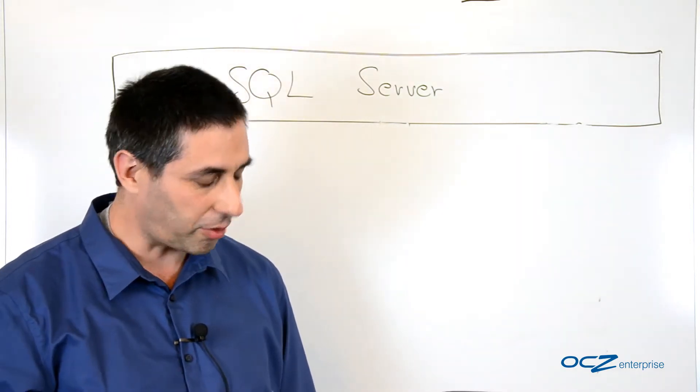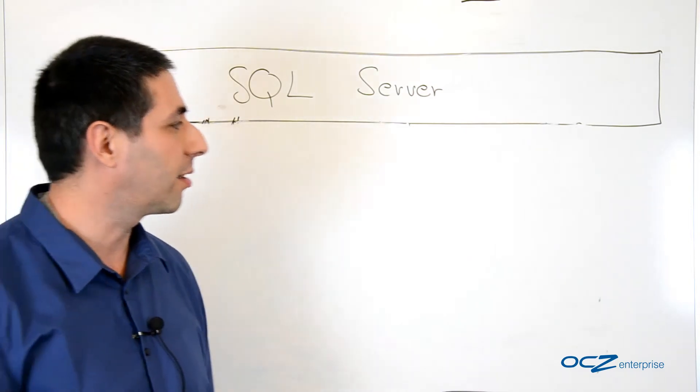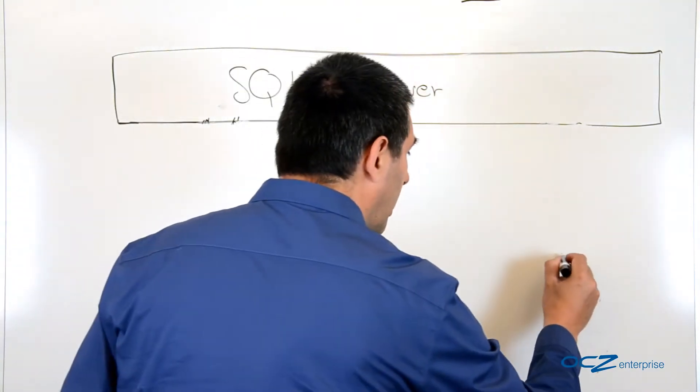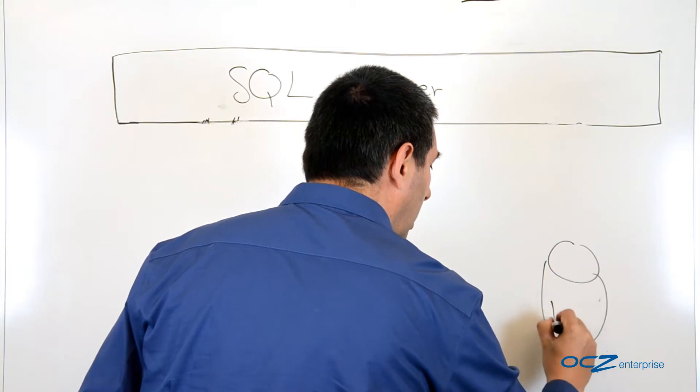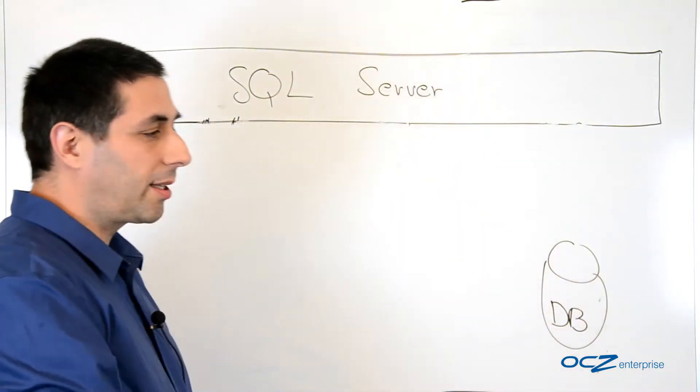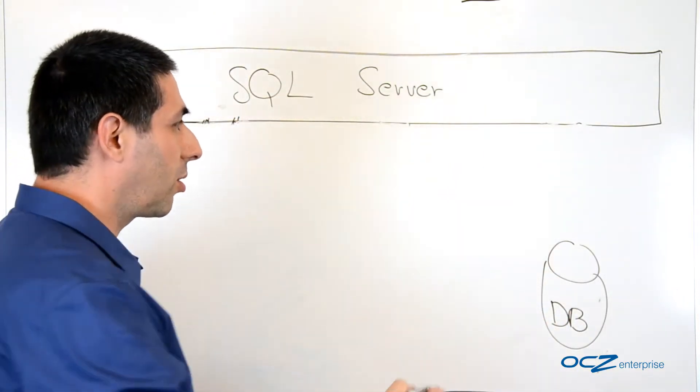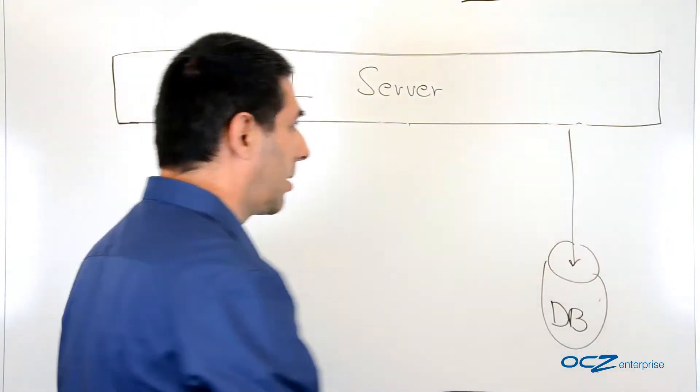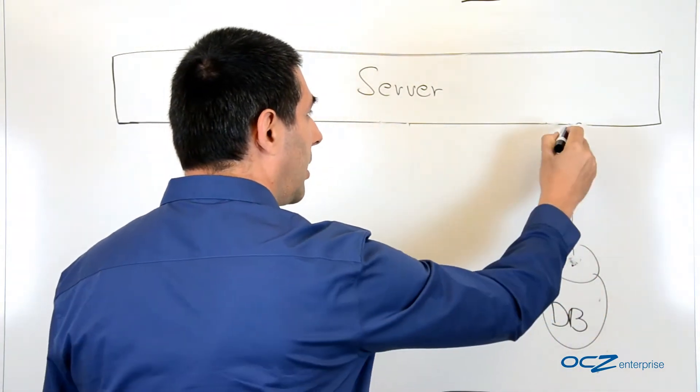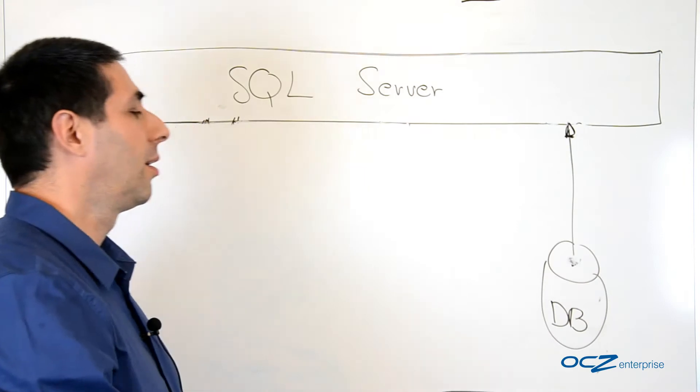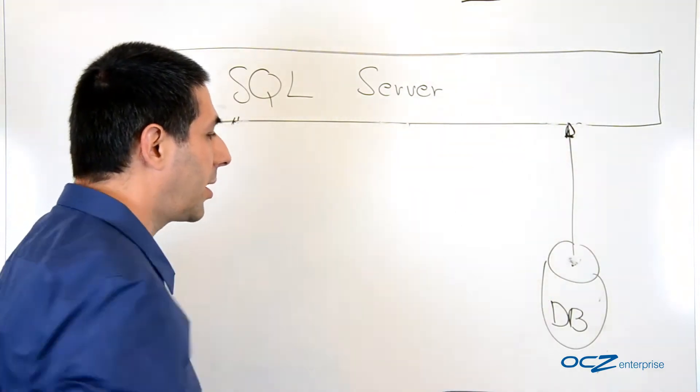Let's see what type of information and data the SQL Server uses. The first one, and the obvious one, is of course the database. The database is used by the SQL Server to store data, records and indexes. Usually, what we will see is reading data from the database towards the SQL Server.